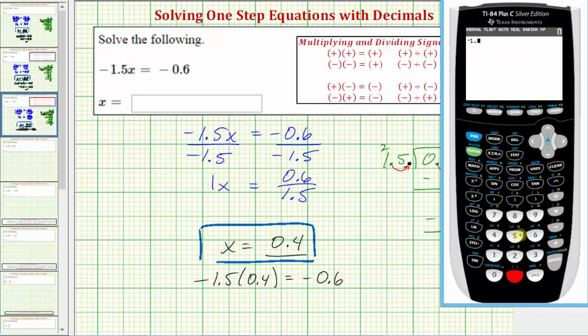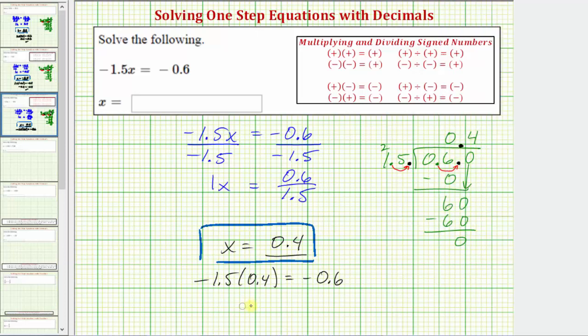Negative one point five times zero point four is equal to negative point six, or negative zero point six. So this shows our solution is correct. I hope you found this helpful.